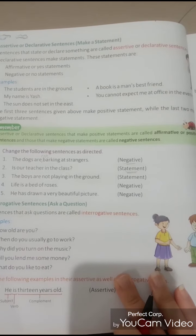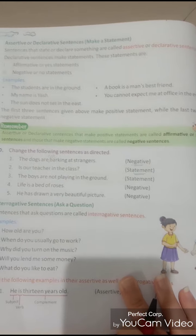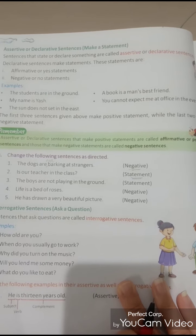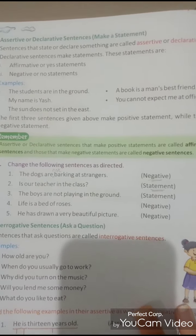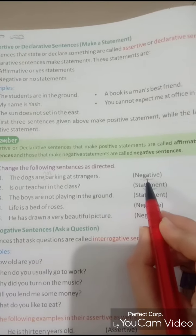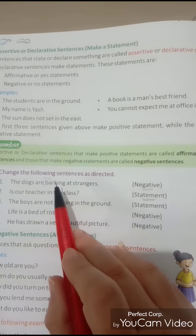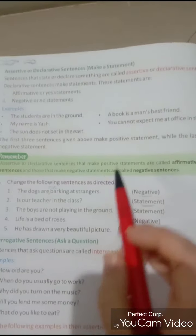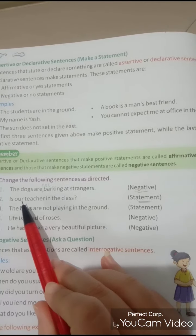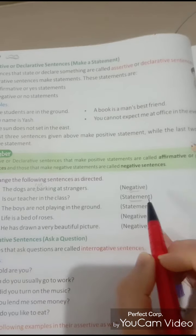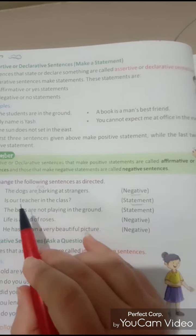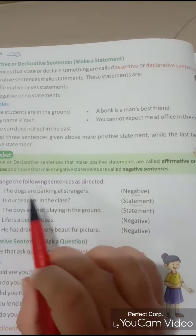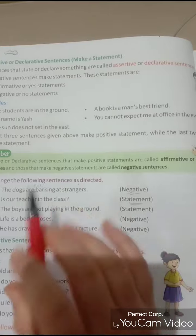Starting with exercise D — I think I have shared one video that you all have already seen. Let's solve this: 'Change the following sentences as directed.' The dogs are barking — you have to change it to negative, so: 'The dogs are not barking.' Second one: 'Is your teacher in the class?' — you have to make this into a statement, so: 'Our teacher is in the class,' and you remove the question mark.